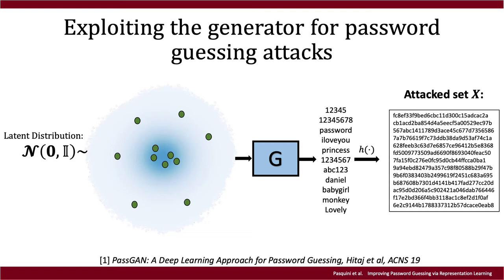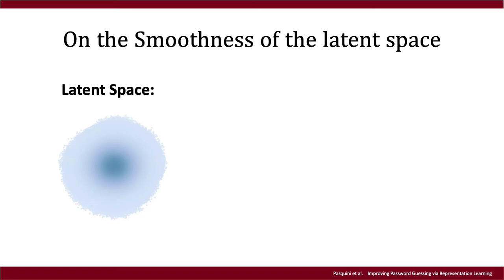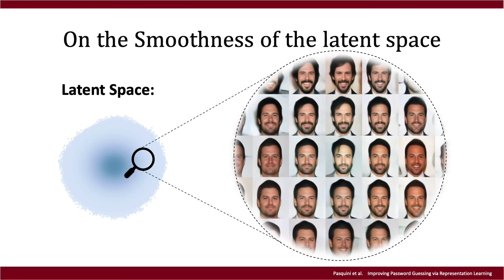The idea of using models such as GANs in password guessing attacks is not new, but there is a very compelling property of those models that has never been exploited for this task — how the neural network organizes the latent space during training. In the general case, two close points in the latent space are always mapped into similar points in the data space, where similarity refers to a semantic similarity defined in the data space. On the slide, an example of this mechanism shows that faces with similar attributes lie close to each other in the latent space. Of course, this same property works also for passwords.